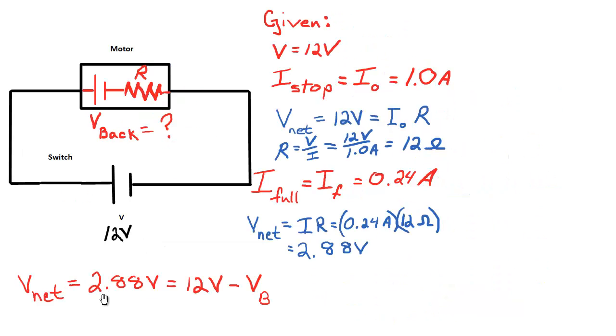We see our equation as 2.88 volts is 12 minus V-back. All that's left is to solve for V-back. So our back voltage will simply be 12 minus 2.88.